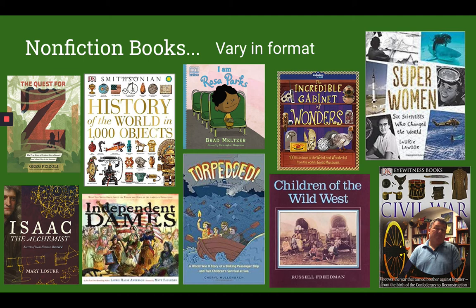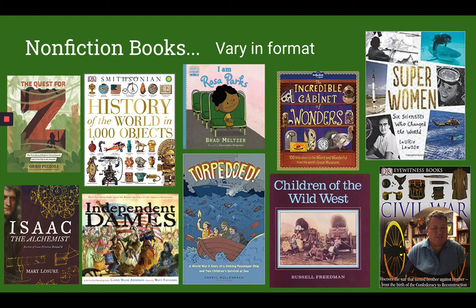Non-fiction books also come in a huge variety of formats. Torpedoed is more of a novel, whereas Independent Dames is a great picture book. Isaac the Alchemist about Isaac Newton is more of a read. This Incredible Cabinet of Wonders has flip doors you can pull up and look at. So a huge variety of formats in non-fiction — lots of things to offer students and a really fun way to engage them in facts about real-life events and people.